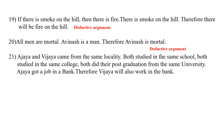Now we come to the twenty-fourth. Ajay and Vijay came from the same locality. Both studied in the same school, the same college, and did their post-graduation from the same university. Ajay got a job in a bank; therefore Vijay will also work in the bank. The evidences given here are not sufficient to conclude about Vijay, and the conclusion is not implicitly present in the premise. So this argument is of inductive type.